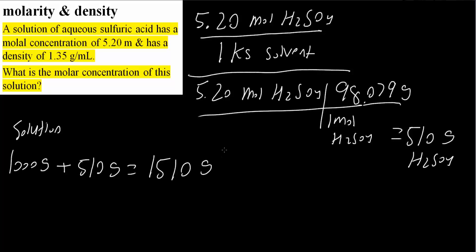From here we will use density. So we have 1510 grams and we have the density which is 1.35 grams would give us 1 milliliter, and we know that a thousand milliliters is 1 liter, so we would get 1.119 liter.